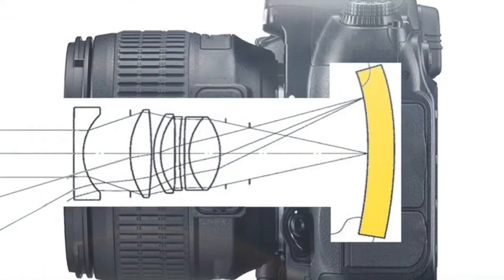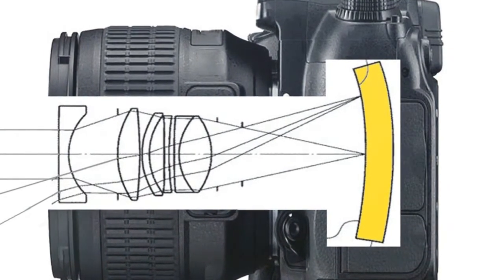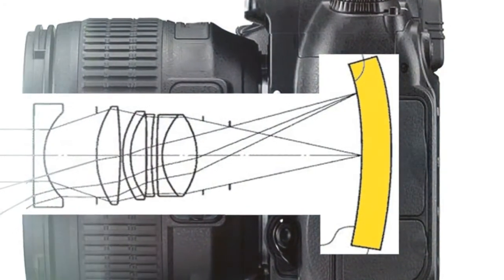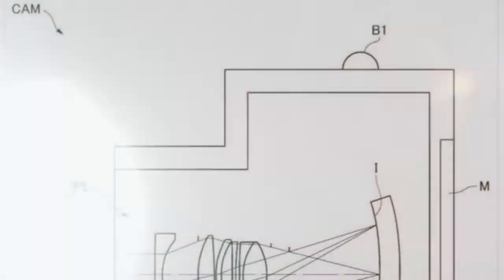The patent was spotted by a Japanese blog. It shows and describes the new 35mm f2.0 prime lens designed for a camera containing a full-frame curved sensor.